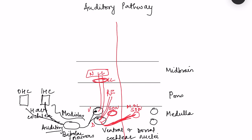From the superior olivary nuclei, fibers ascend and reach the inferior colliculus in the midbrain. Fibers which synapsed in the nucleus of the lateral lemniscus also reach the inferior colliculus. The fibers reaching the inferior colliculus are third-order neurons. First-order neurons synapse in the ventral and dorsal cochlear nuclei, second-order neurons mostly synapse in the superior olivary nucleus, and from there third-order neurons reach the inferior colliculus.